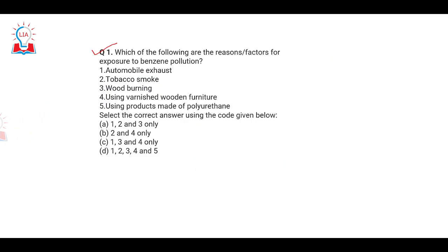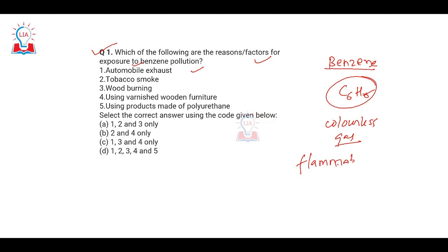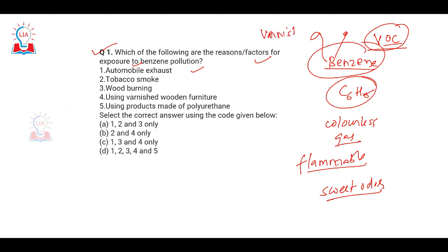The first question asks: which of the following are the reasons or factors for exposure to benzene pollution? First, we need to understand what benzene is. Benzene is C6H6 — it is a colorless, flammable gas with a sweet odor. It is a volatile organic compound. For example, the odor you smell from petrol and diesel, or the smell coming from paint when you warm a wood surface — that is benzene.